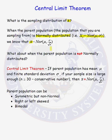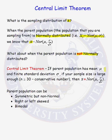We want to know: can we determine the sampling distribution of x-bar, our sample mean, if our parent population is not normally distributed? The Central Limit Theorem says that we can determine the sampling distribution of x-bar regardless of the distribution of our parent population, as long as our sample size is large enough, as long as our parent population has mean mu and finite standard deviation sigma.